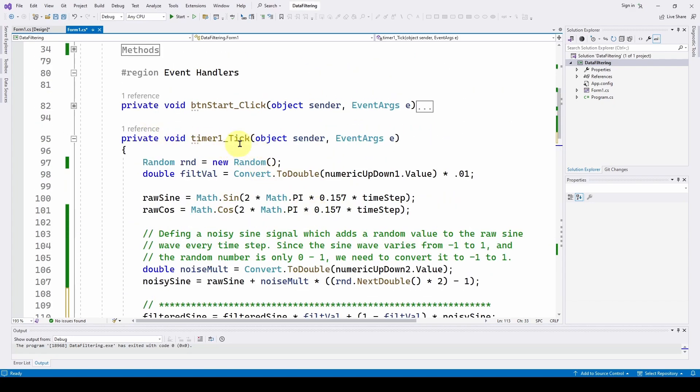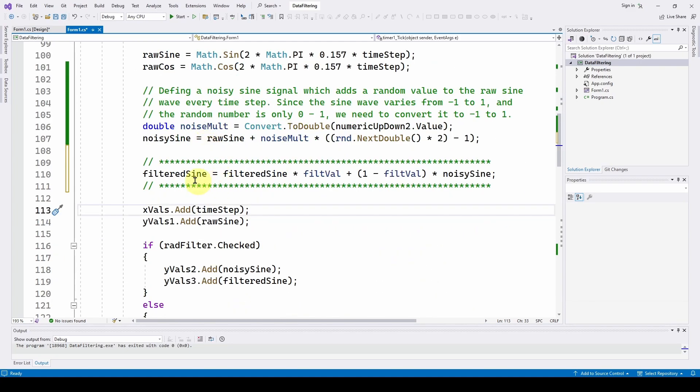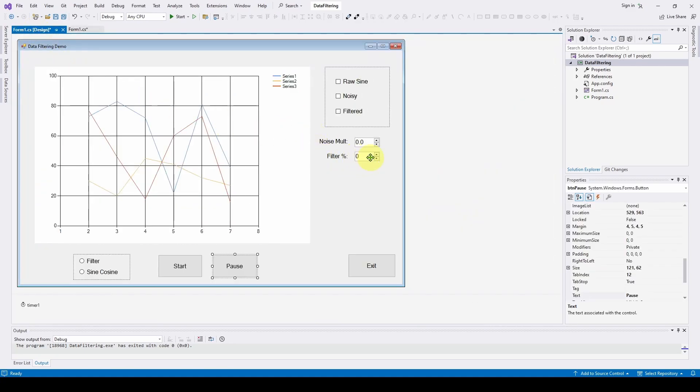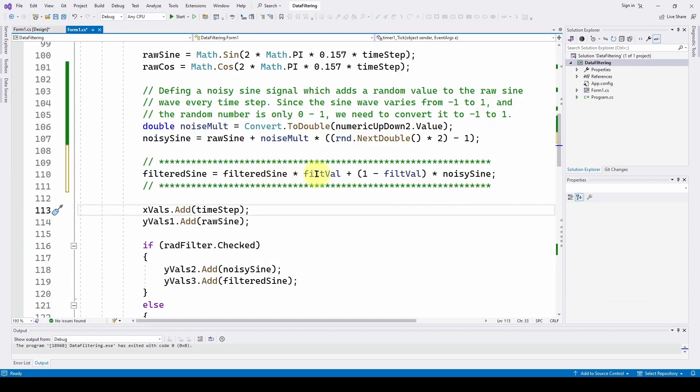This is in my timer event handler where I'm going out grabbing data. And all we need to do is calculate the latest value, the filtered sine wave value, is equal to the previous one times whatever the filter value is. And that's grabbed from this filter percent.